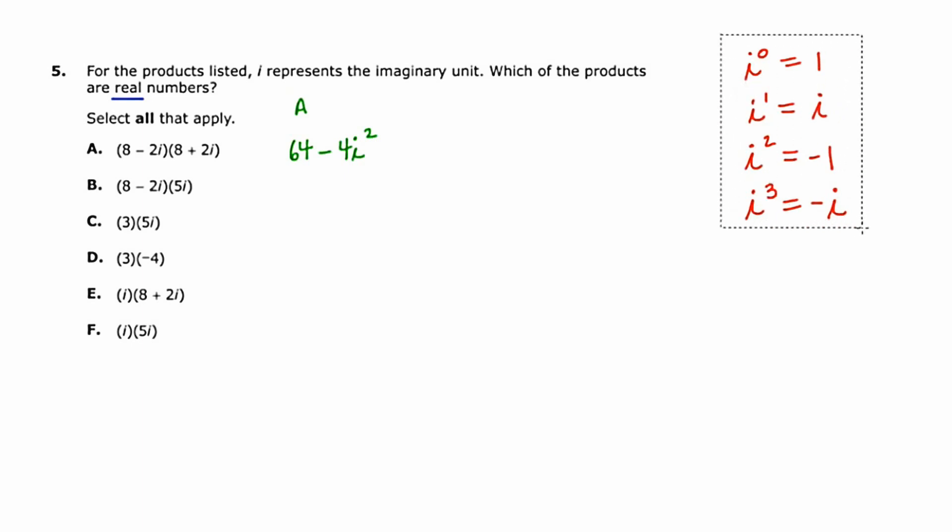That's one way you can remember these four basic powers of i, which are really helpful in knowing when you're doing a problem like this over here. So let's go back to the green and finish this out. i squared, remember, is negative one, which makes this negative four times negative one, or sixty-four plus four, or sixty-eight. And certainly, that's real, so I'm going to put a check by that.